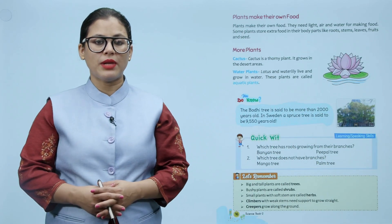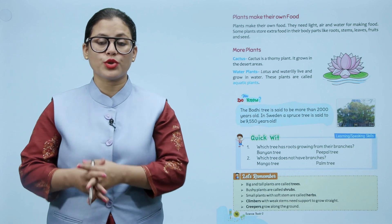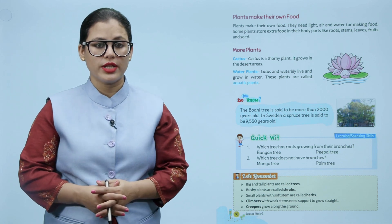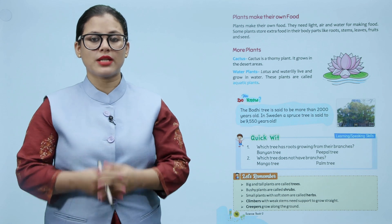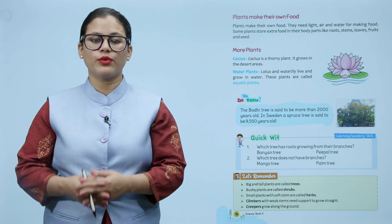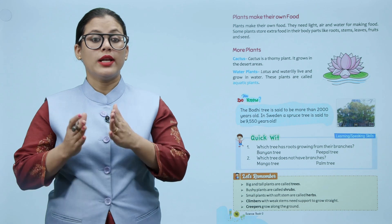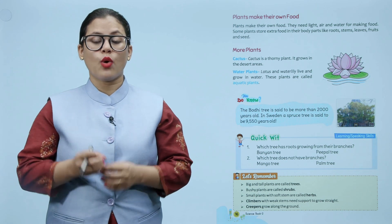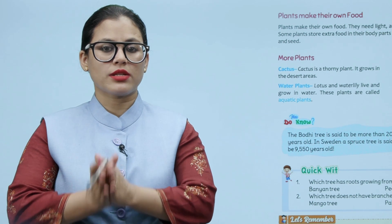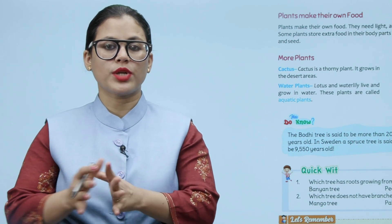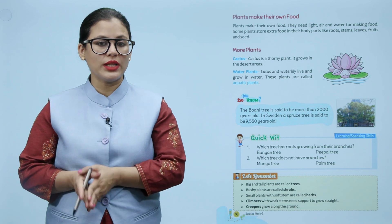Plants make their own food. They need light, air, and water for making food. Some plants store extra food in their body parts like roots, stems, leaves, fruits, and seeds. Plant apna khana khud banate hain. Unhe light, air, aur water ki zaroorat hoti hai apna khana banane ke liye. Aur kuch plants aise hote hain jo extra food ko apne body parts mein store kar dete hain.